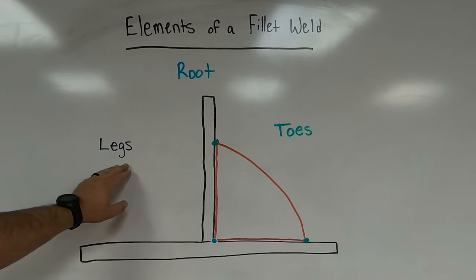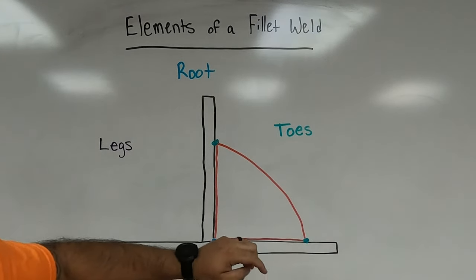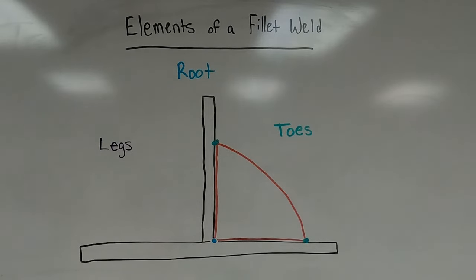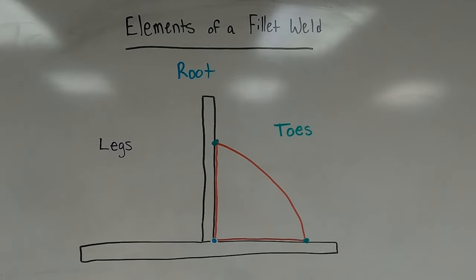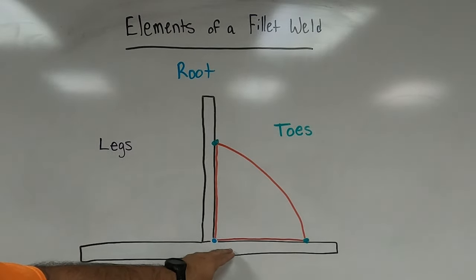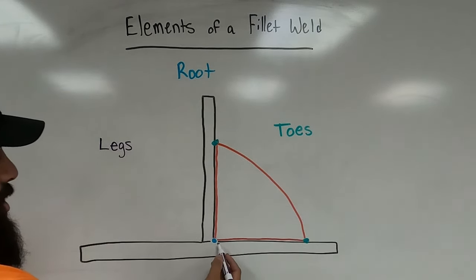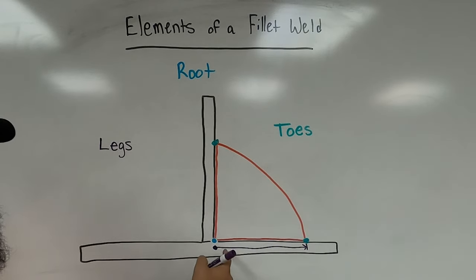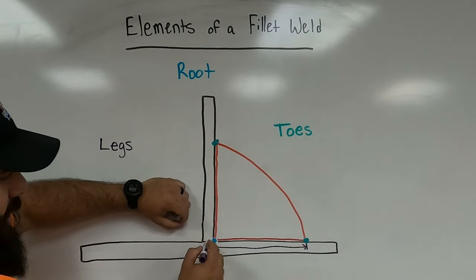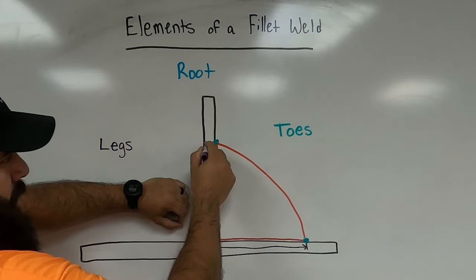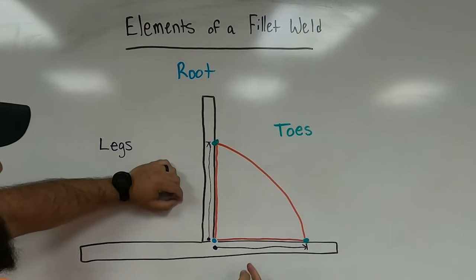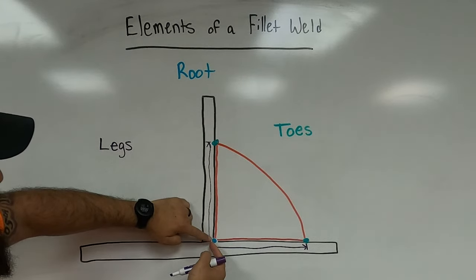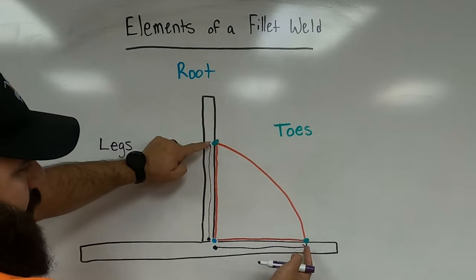The next element is the legs. A fillet weld has two legs. The leg of a fillet weld is the length or distance that the weld extends from the root to either side — essentially the distance from the root of the weld to the toe. One leg starts at the root and extends to one toe; the second leg starts at the root and extends upward to the other toe.